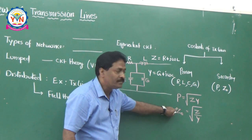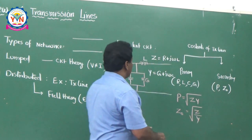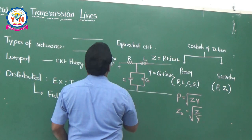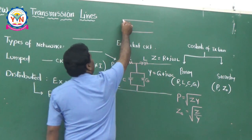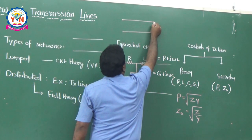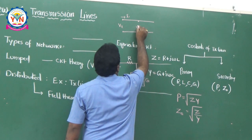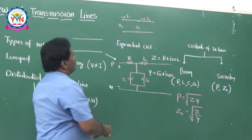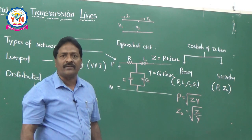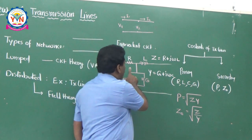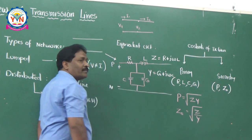There are two types of constants: primary constants R, L, C, G and secondary constants — propagation constant p and characteristic impedance Z₀. From primary constants we derive the secondary constants. Series impedance Z = R + jωL and shunt admittance Y = G + jωC. Secondary constant propagation constant p = √(ZY), and characteristic impedance Z₀ = √(Z/Y).